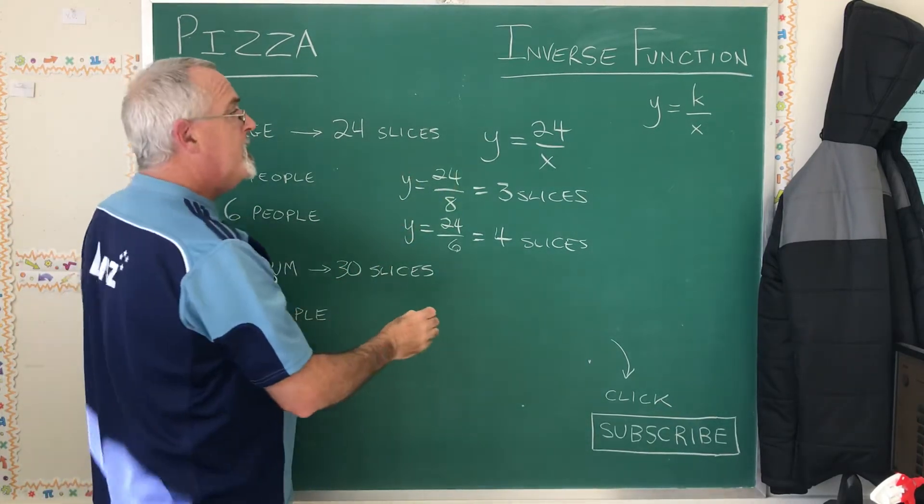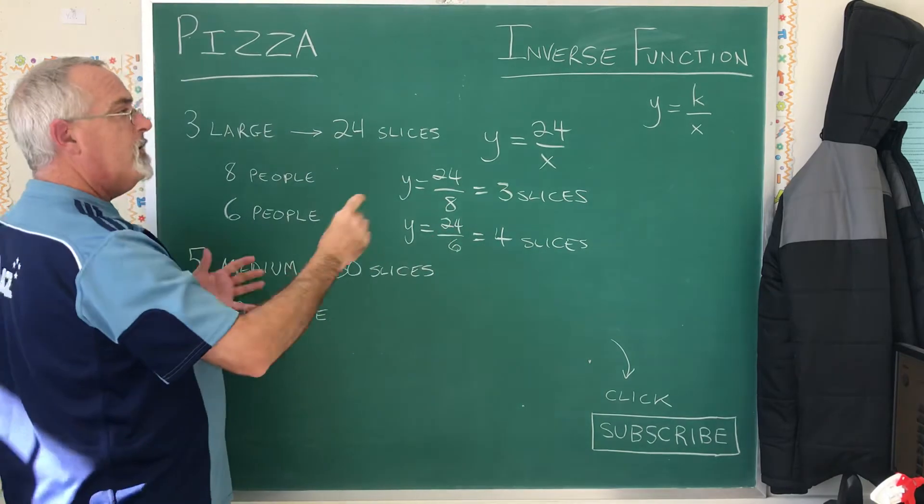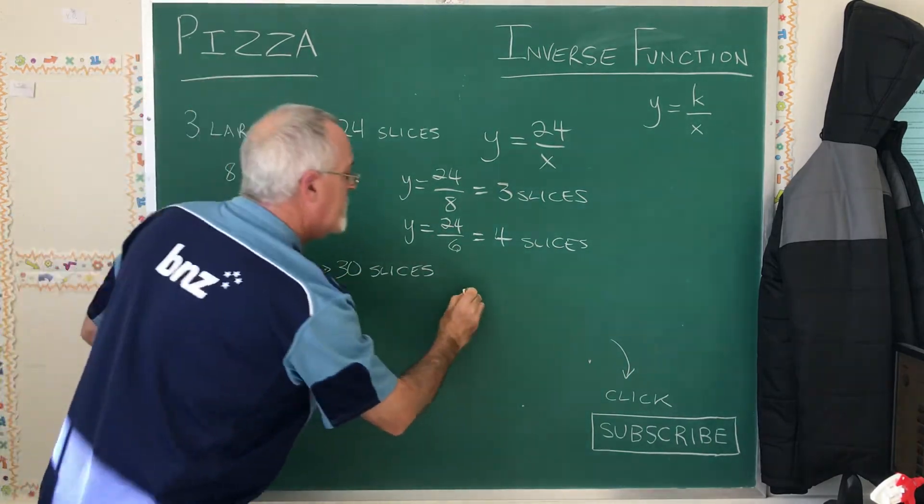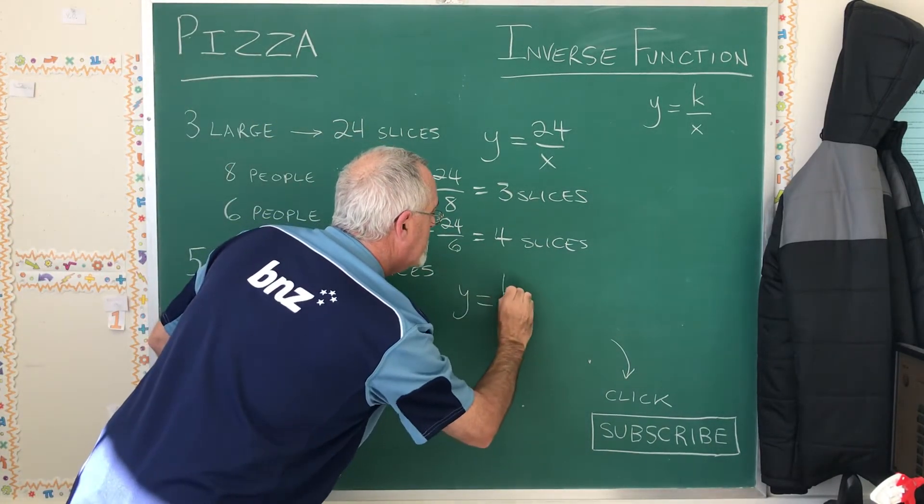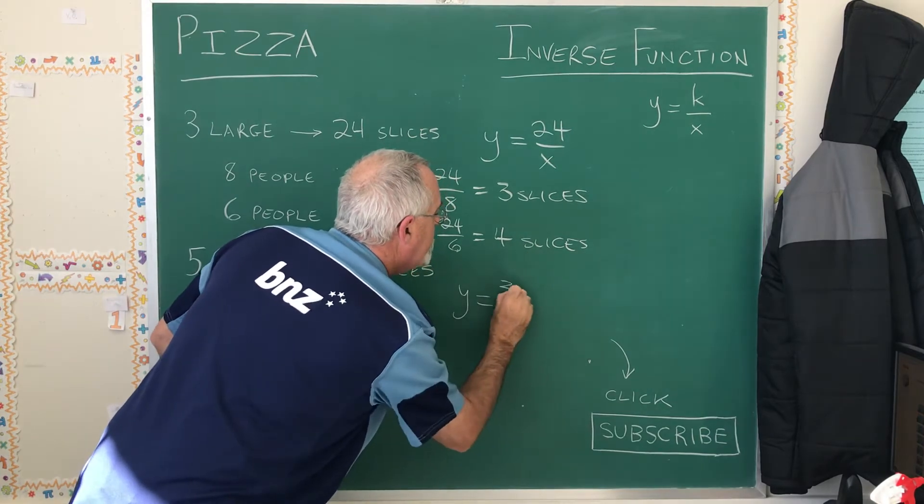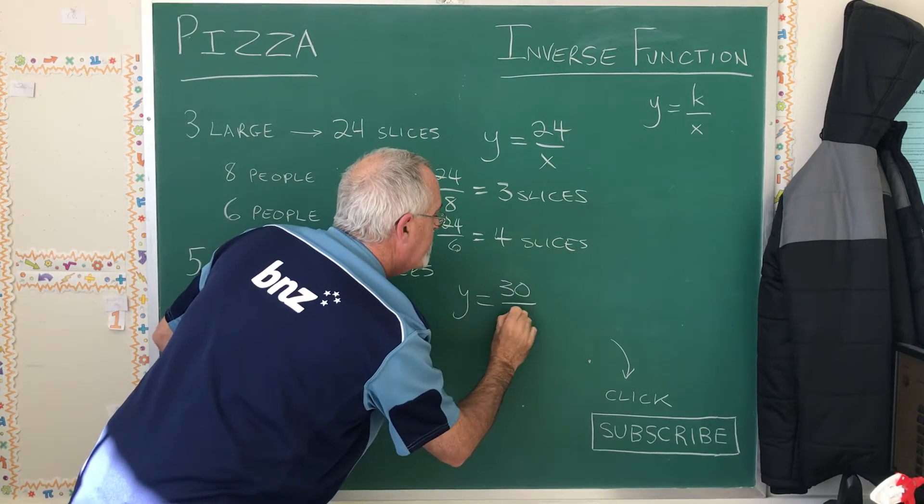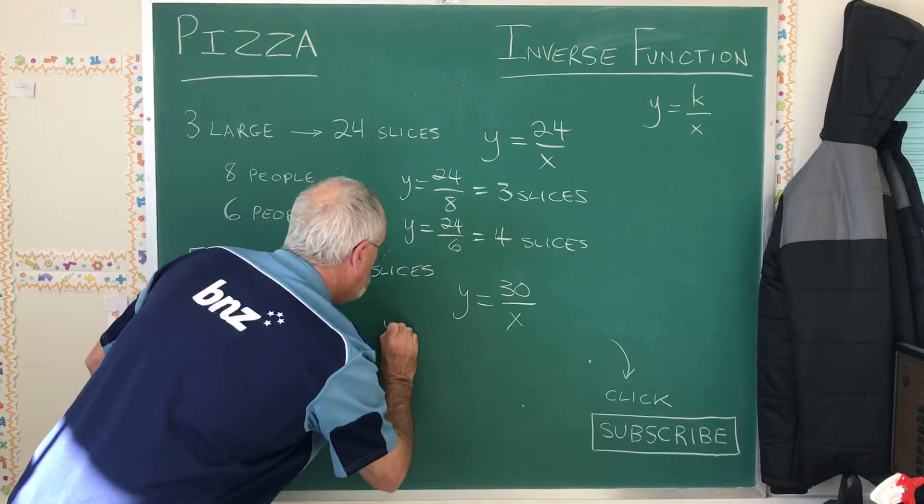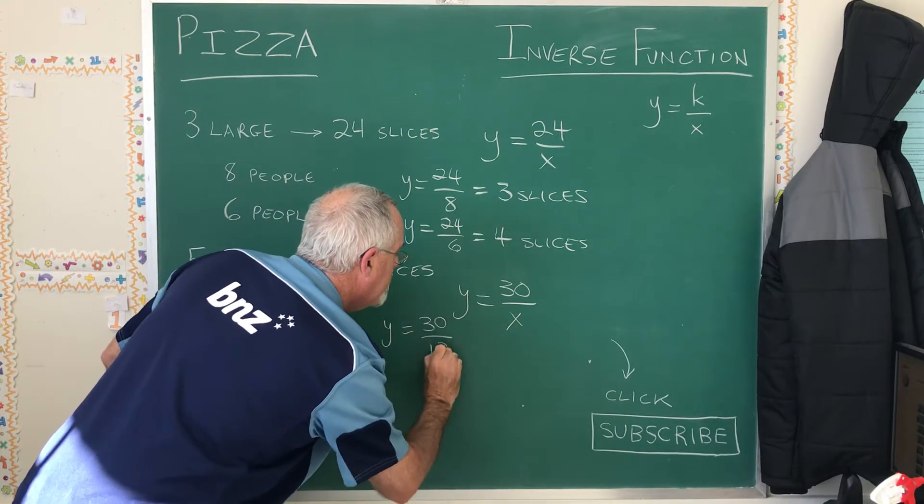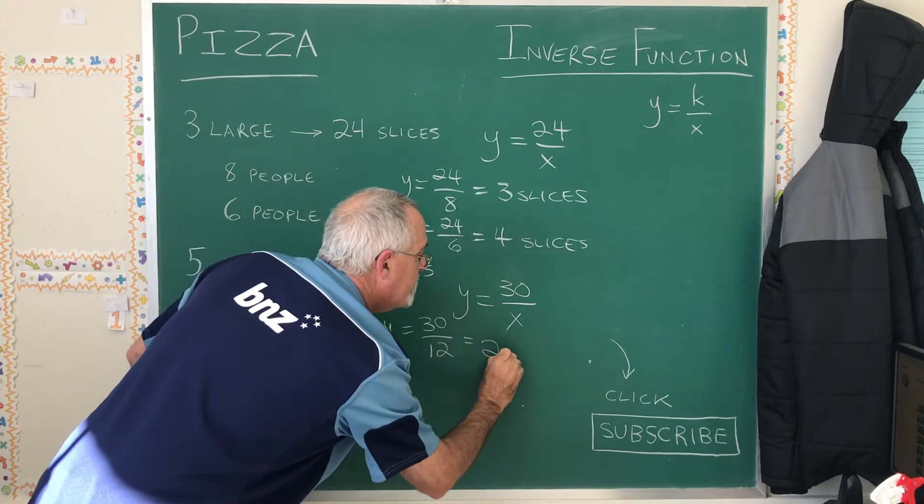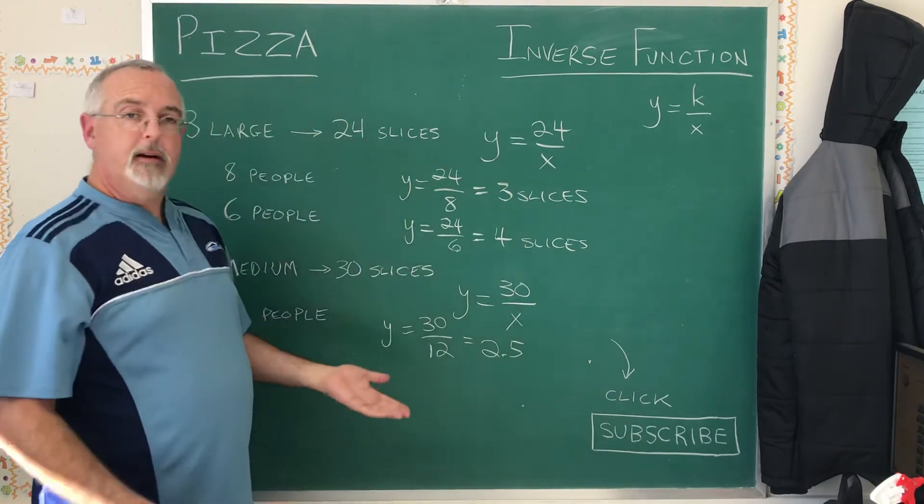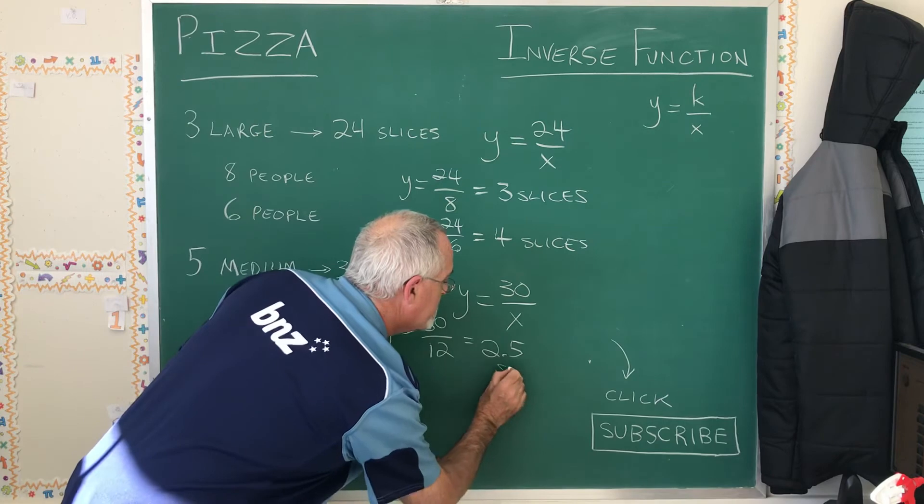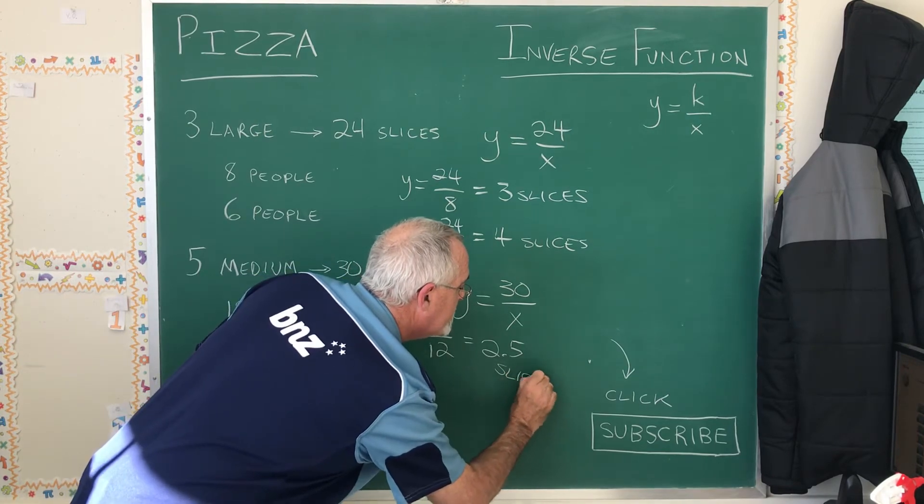We need a new inverse function, because k is no longer 24, and this inverse function k is 30. y equals 30 over x, and if x is 12, y is equal to 30 divided by 12, which is 2.5. Therefore, each person is going to get 2.5 slices.